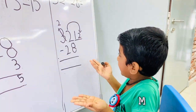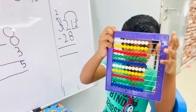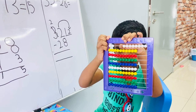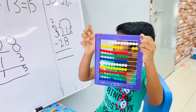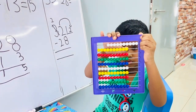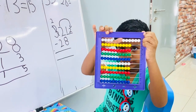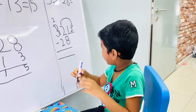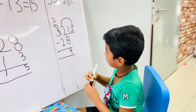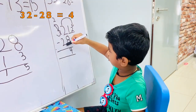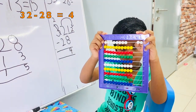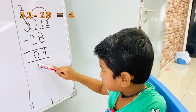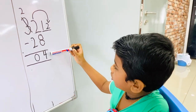Now we can easily minus: 12 minus 8. 1, 2, 3, 4, 5, 6, 7, 8. 1, 2, 3, 4, 5, 6, 7, 8. Minus 8, then you write here 4. Okay? Now 2 minus 2. 2 minus 2 is 0, so you write here 0. 0 has no value because it comes before 4. So the answer is 4.